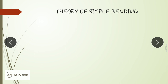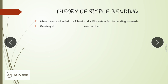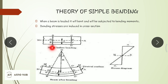In this lecture we will see the theory of bending, the expression for bending stress, and a numerical example. When a beam is loaded it will bend and will be subject to a bending moment. As you can see in the figure, the beam section is essentially straight before loading; after loading it will bend like a circular arc. We will discuss the neutral axis in this context.